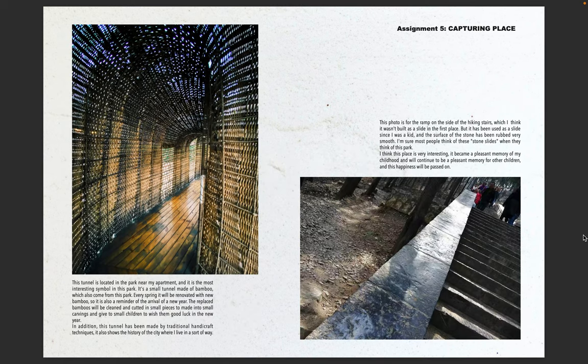The first one is capturing place. In this task, I choose two places that have special memory for me. On the left side is an image of a tunnel located in the park near my apartment, and it's a unique symbol of this park.